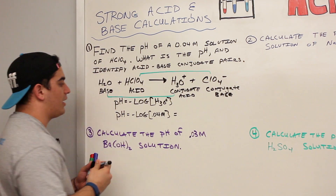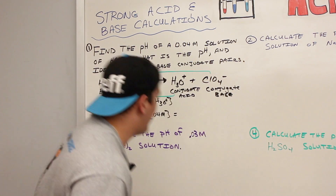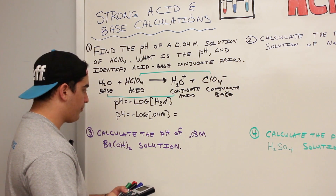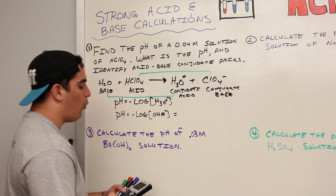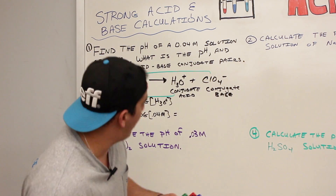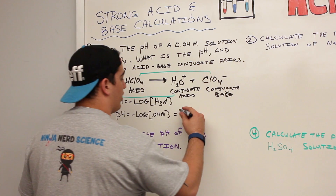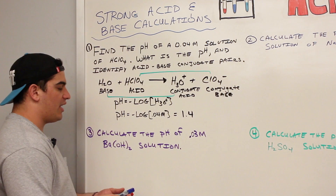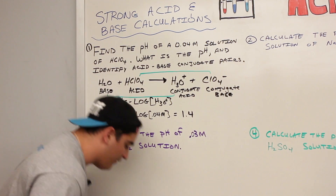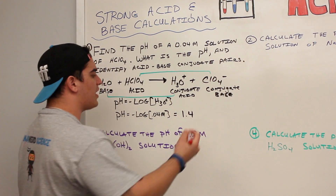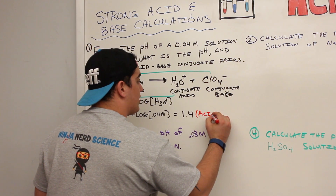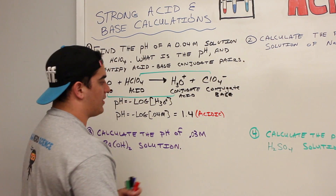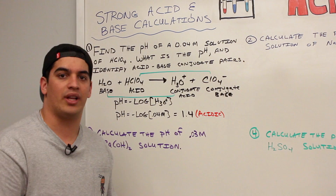Let's plug that into the calculator: the negative log of 0.04 is equal to 1.39, which we round up to 1.4. So the pH is 1.4. As we discussed in the previous video, a pH of 1.4 is very acidic — and this makes sense because we're dealing with perchloric acid, which is a very strong acid, so we expect the answer to be in the acidic range.